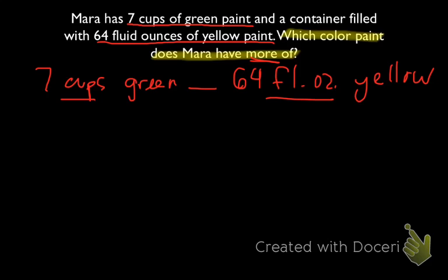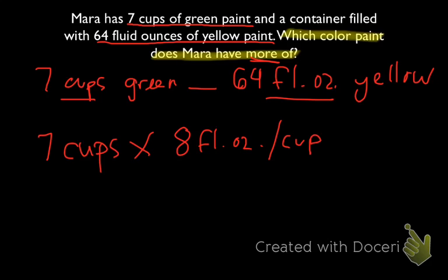So for us to change cups into fluid ounces, we'll take how many cups of green we have. That's 7 cups. We're going to multiply that by the number of ounces in a cup. There are 8 fluid ounces in 1 cup. 7 times 8 is going to be 56. So Mara has 56 fluid ounces of green.